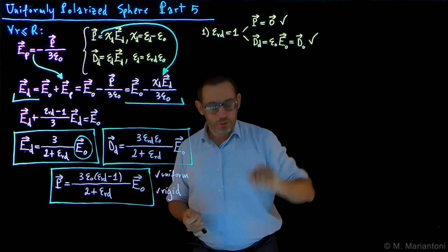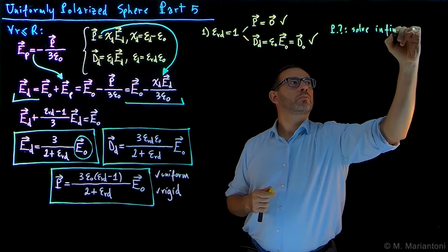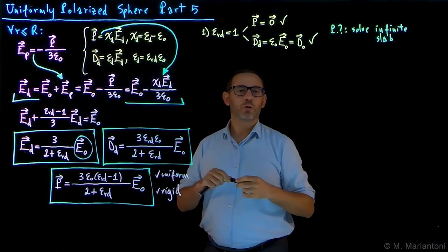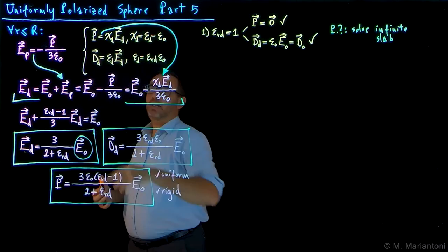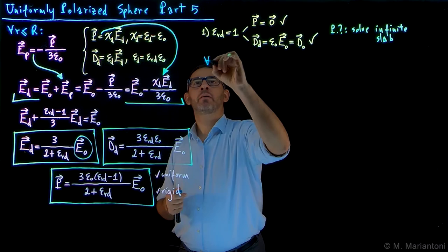For a Piazza assignment, I would like you to solve the same problem for an infinite slab using this self-consistent method: find the total E_D in an infinite slab. It is actually easier than the sphere because instead of minus P over 3 epsilon naught, you need to find what Ep is for an infinite slab.